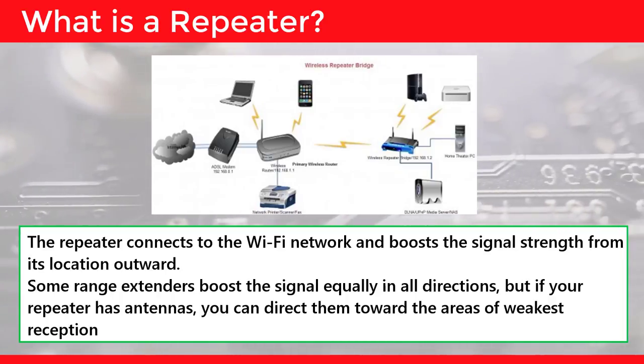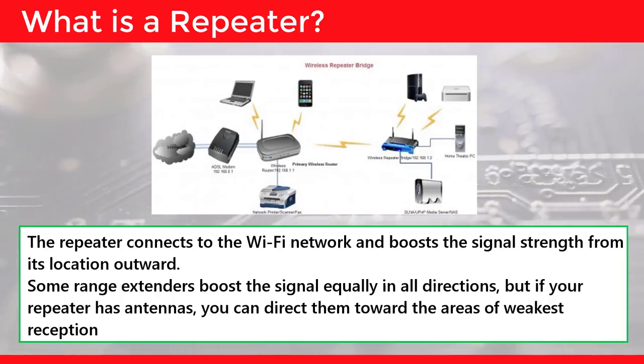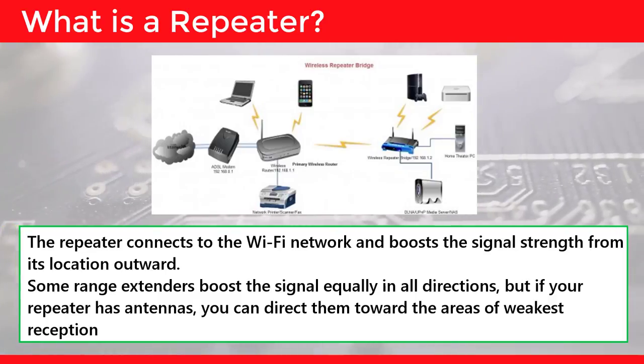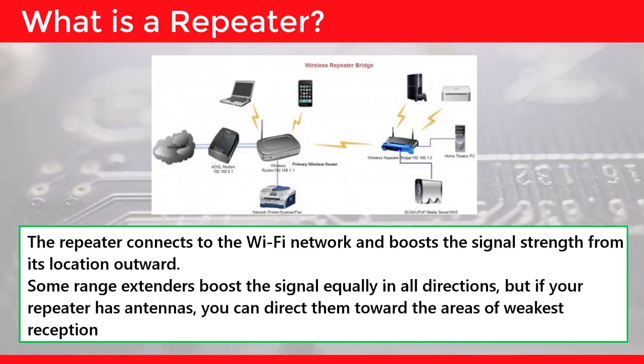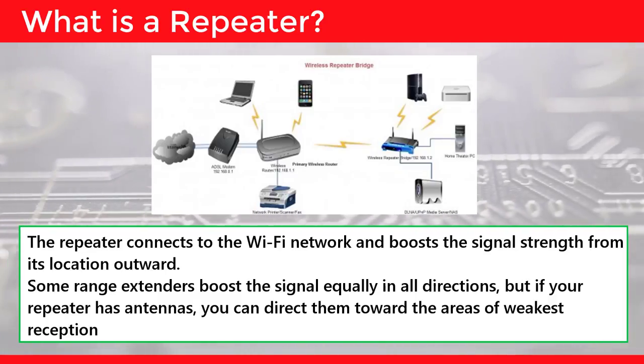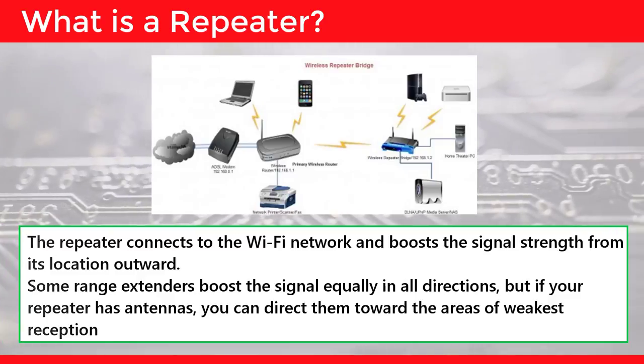Some range extenders boost the signal equally in all directions. But if your repeater has antennas, you can direct them towards the areas of weakest reception.